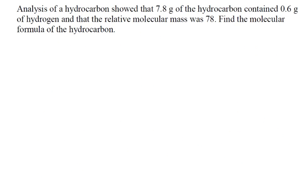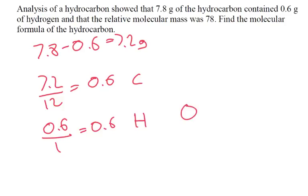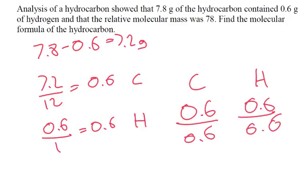The analysis of a hydrocarbon showed that 7.8 grams of the hydrocarbon contained 0.6 grams of hydrogen, and the relative molecular mass was 78. Find the molecular formula. If we've got 0.6 grams of hydrogen, the rest is carbon: 7.8 minus 0.6 = 7.2 grams of carbon. So 7.2 divided by 12 = 0.6 moles of carbon, and 0.6 divided by 1 = 0.6 moles of hydrogen. Dividing both by 0.6 gives a 1 to 1 ratio.